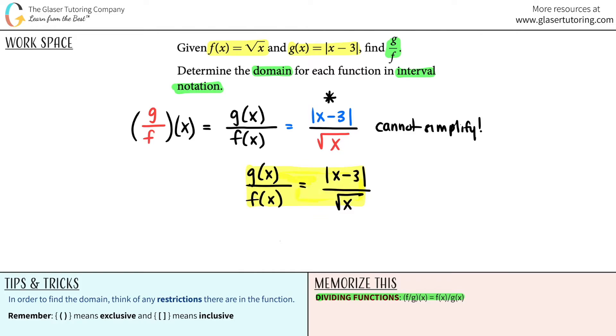So now you need to know your rules for domain. Now I put it over here in your tips and tricks on the bottom left hand corner. In order to find the domain, think of any restrictions there are in the function. Your restrictions are going to come from two things. They're probably going to come from square roots. So look out for those. And they're going to come from denominators. If you have an x value in your denominator, you should know your restrictions for both of these.